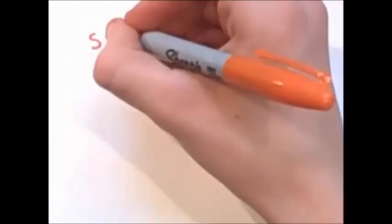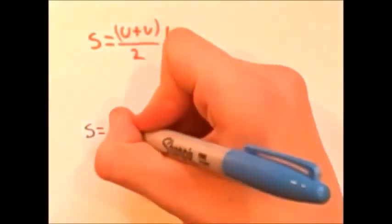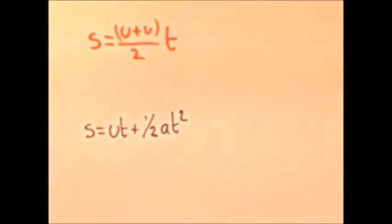There are four formulas which can be used. S equals start speed plus end speed, divided by two, and then times by time. Another is S equals start speed times time, plus one half times acceleration, times time squared.